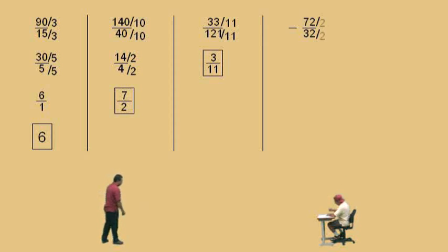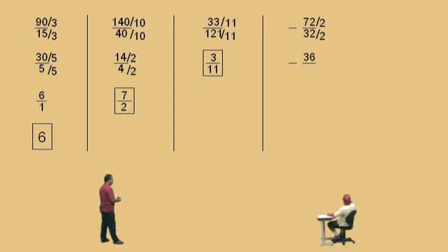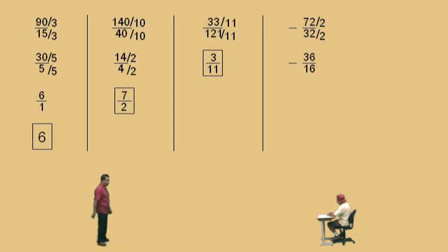Charlie: 2. Professor Perez: By 2, okay. So what's 72 divided by 2? Charlie: 36. Professor Perez: 36, because 36 times 2 is 72. What's 32 divided by 2? Charlie: 16. Professor Perez: 16, because 16 times 2 is 32.